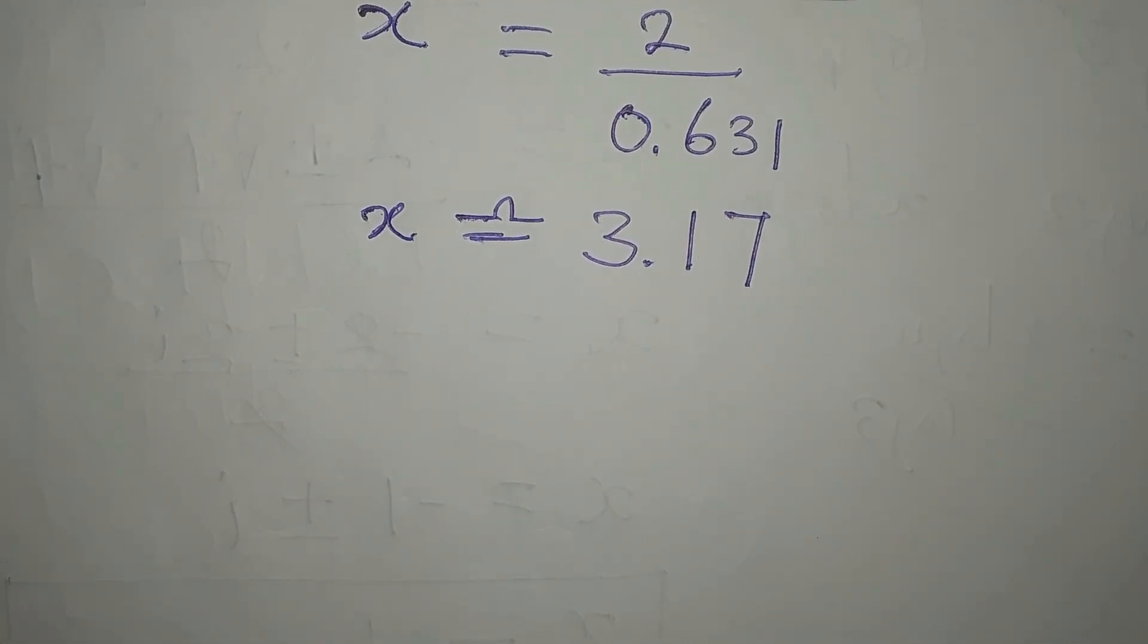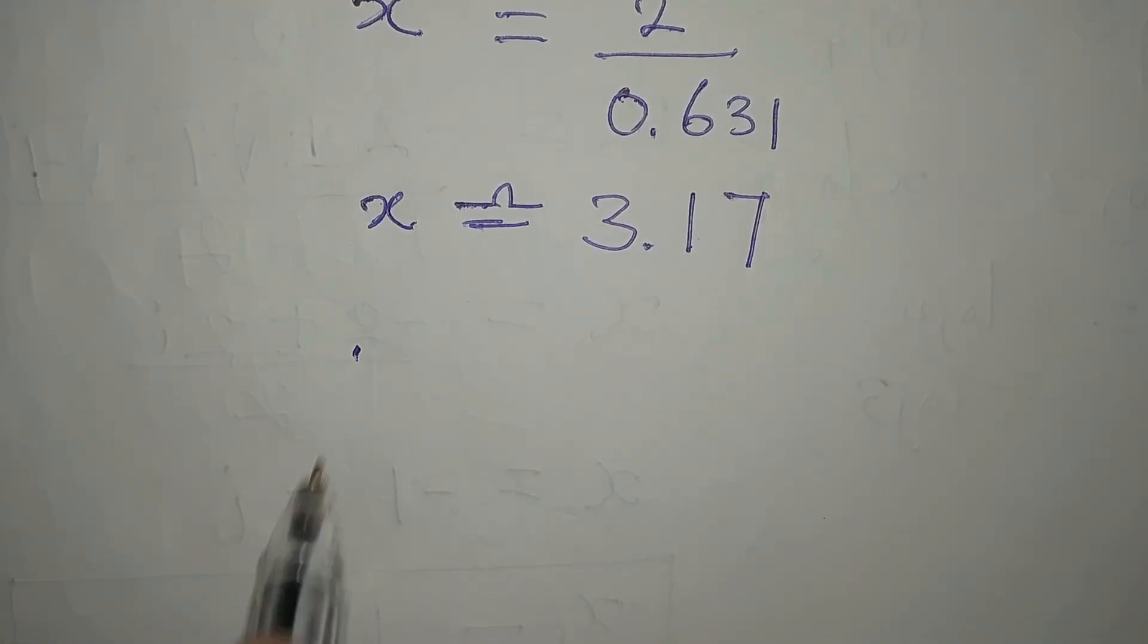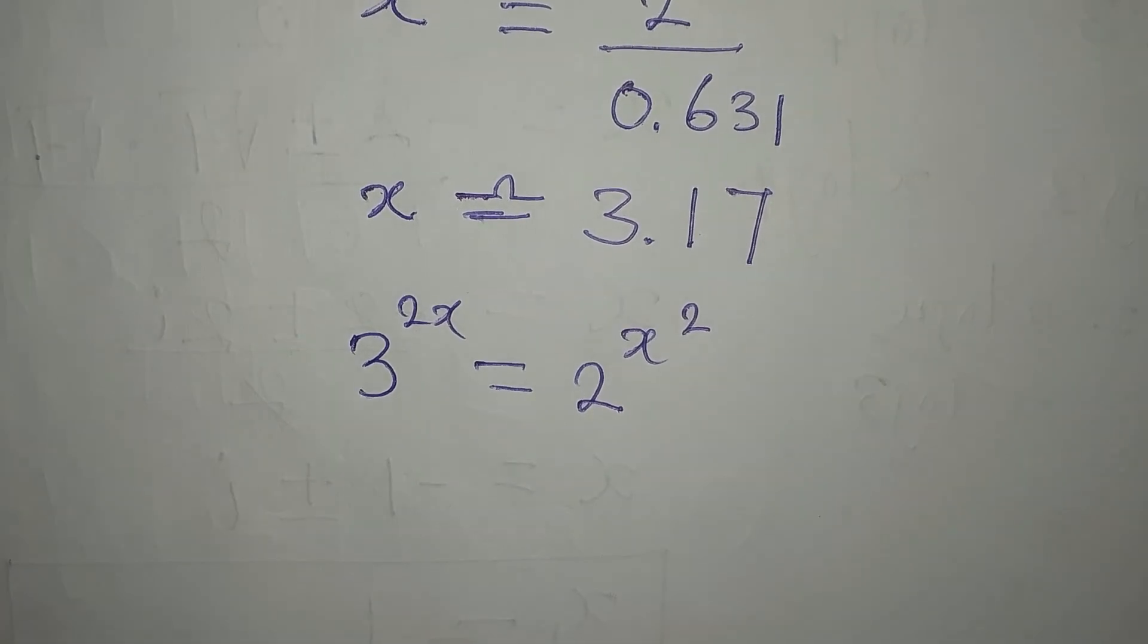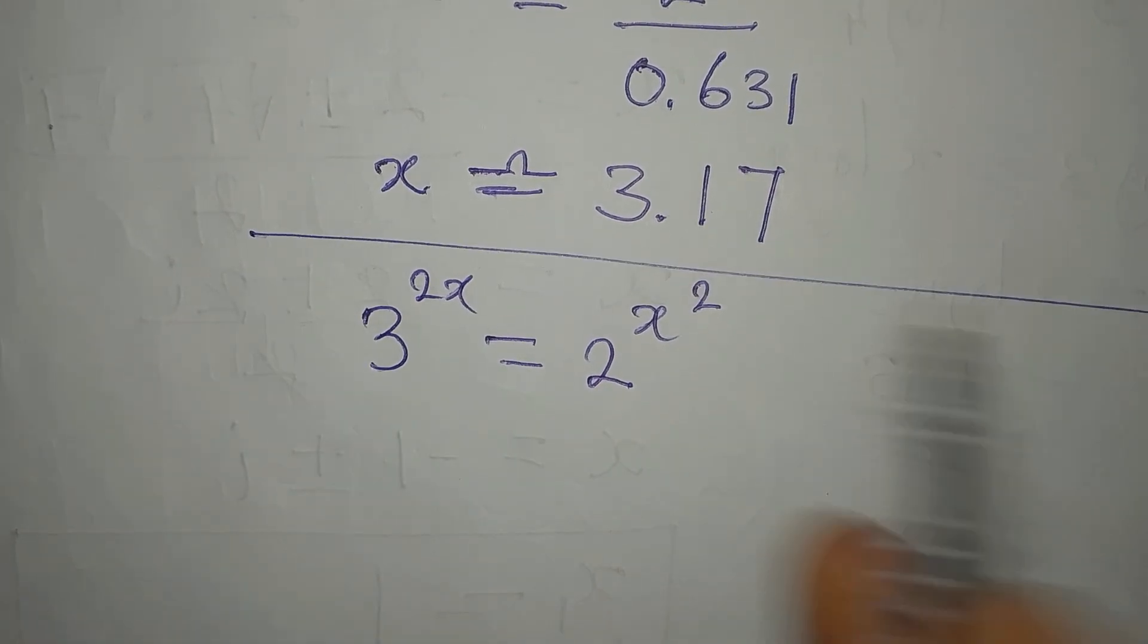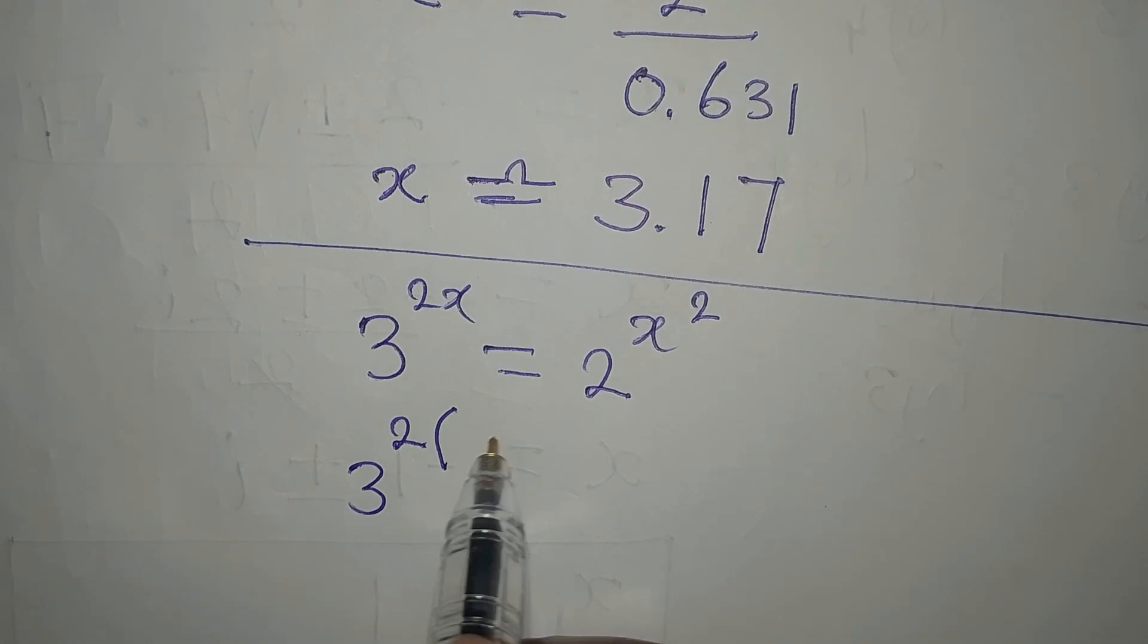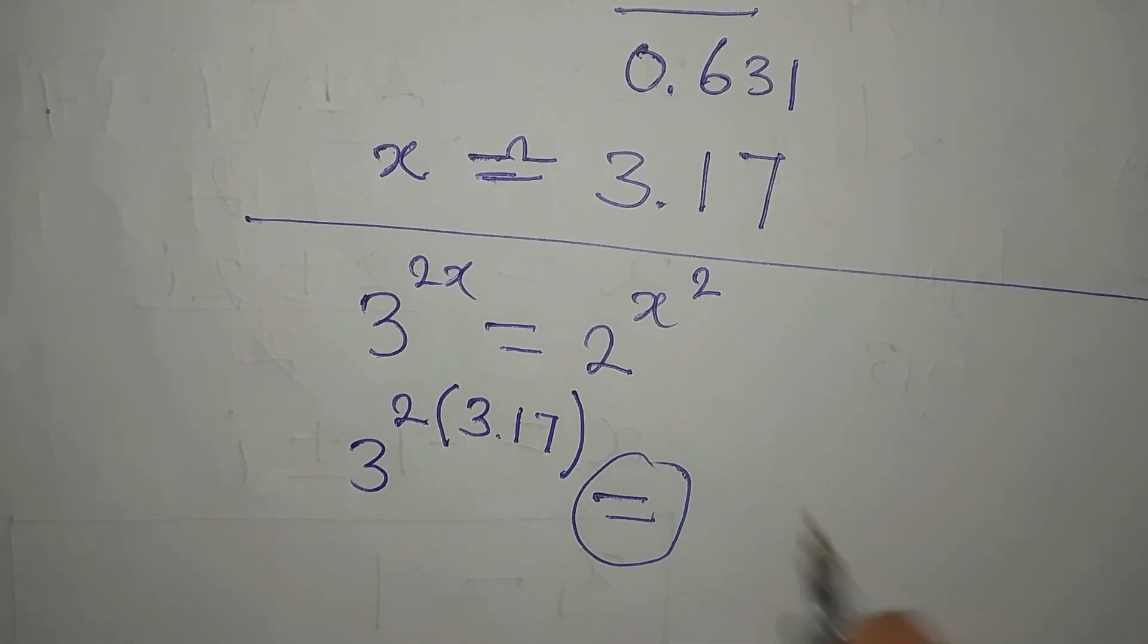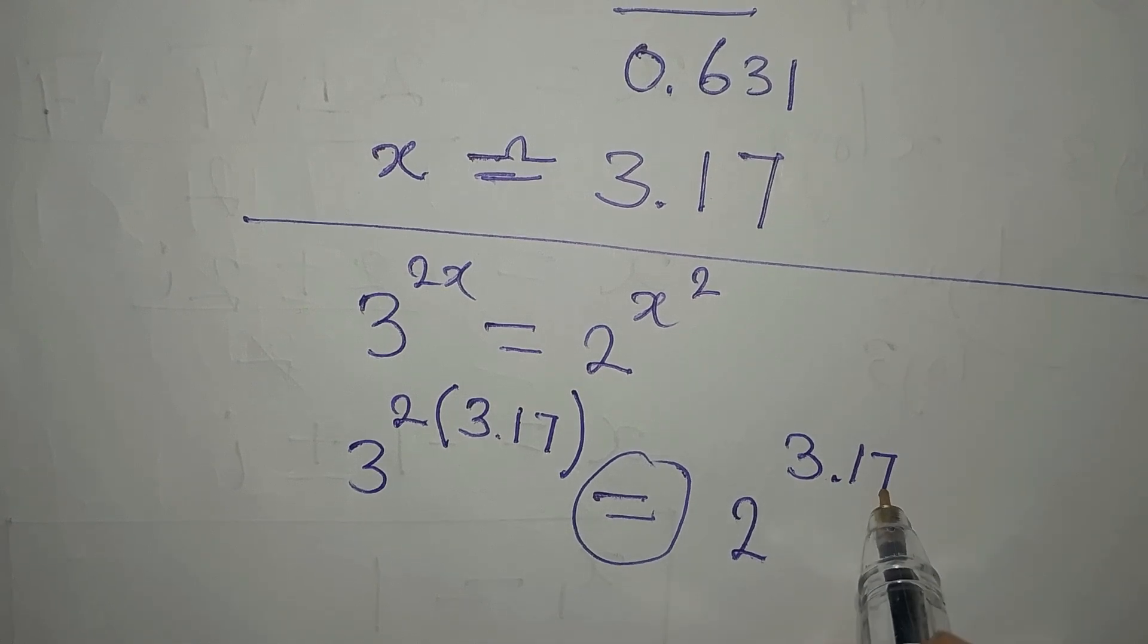The equation again is 3 to the power of 2x equals 2 to the power of x squared. Now let's try to compare the left hand side and the right hand side. We are trying to verify now. Here we are going to have 3 to the power of 2 multiplied by x, which is approximately 3.17, then on the other hand we are going to have 2 to the power of x, which is still 3.17, and there is square on it.